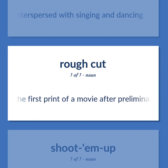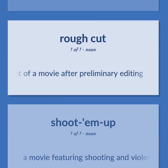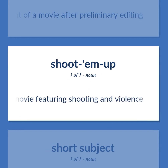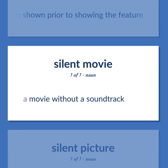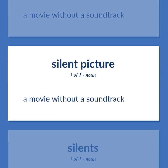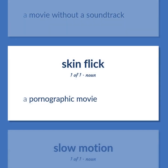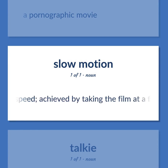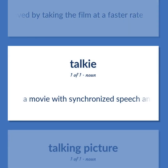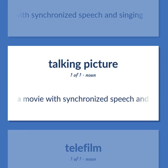More movie types: The first print of a movie after preliminary editing. A movie featuring shooting and violence. A brief film, often shown prior to showing the feature. A movie without a soundtrack. A pornographic movie. A movie that apparently takes place at a slower than normal speed, achieved by taking the film at a faster rate. A movie with synchronized speech and singing.